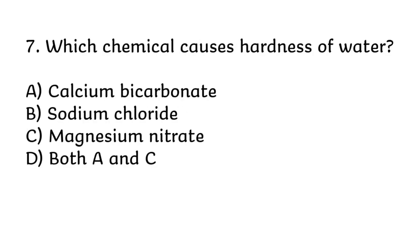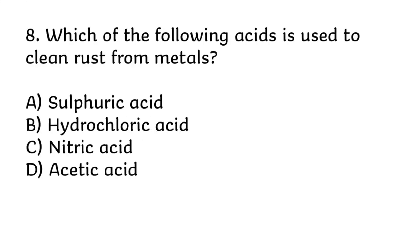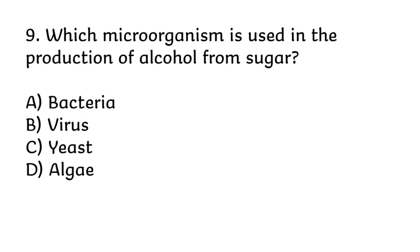Which chemical causes hardness of water? Correct answer is D, both A and C. Which of the following acids is used to clean rust from metals? Correct answer is B, hydrochloric acid. Which microorganism is used in the production of alcohol from sugar? Correct answer is C, yeast.